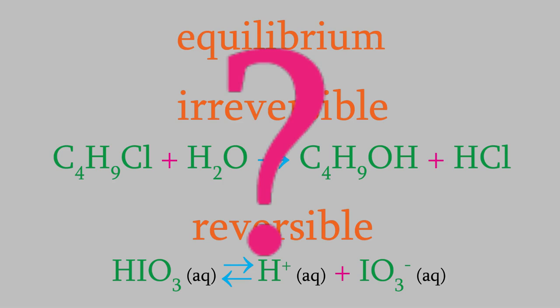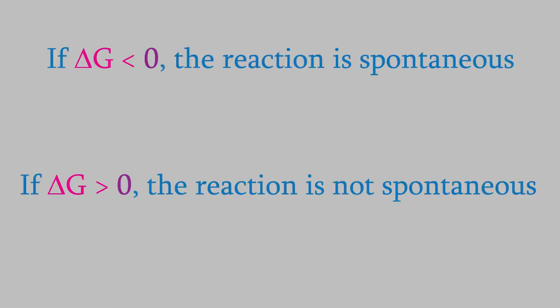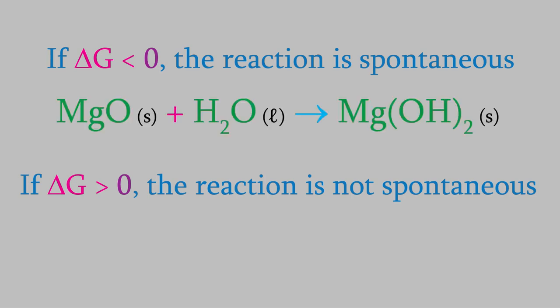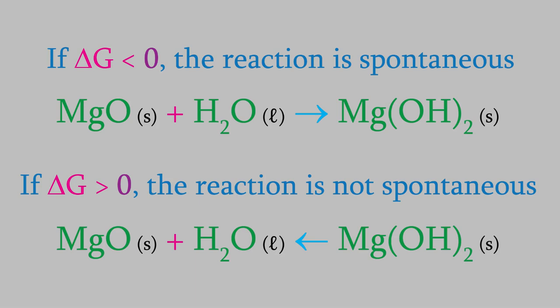You might recall that when we were learning about Gibbs free energy in the last video, we saw that a reaction is spontaneous when delta G is less than zero, and non-spontaneous when delta G is greater than zero. That means the reaction will proceed in the forward direction when delta G is a negative number. When delta G is positive, the reaction is non-spontaneous, but that doesn't mean no reaction is possible. Instead, the reaction is spontaneous in the reverse direction.